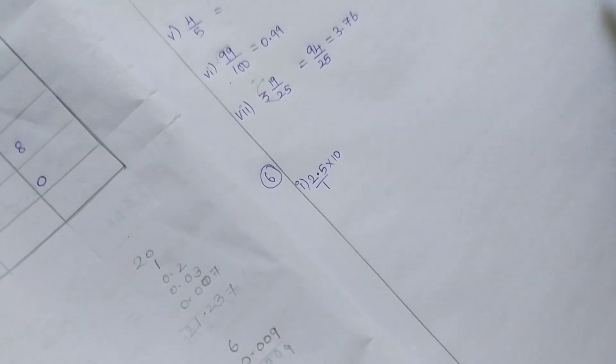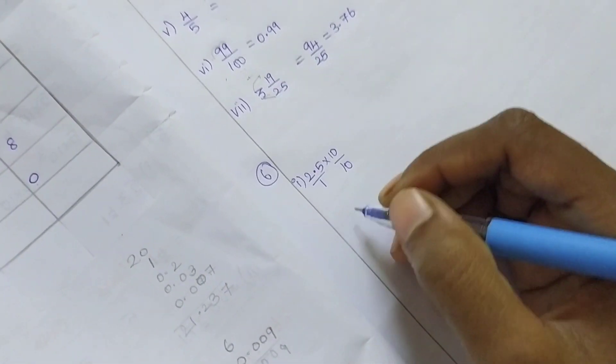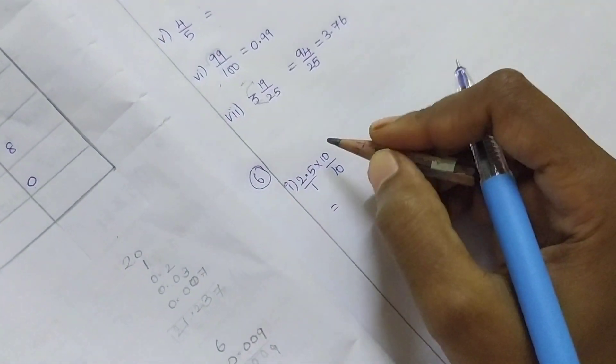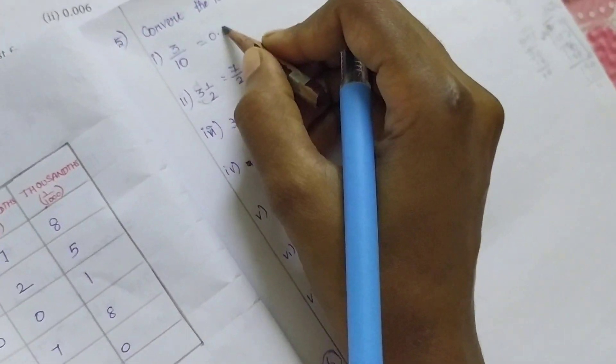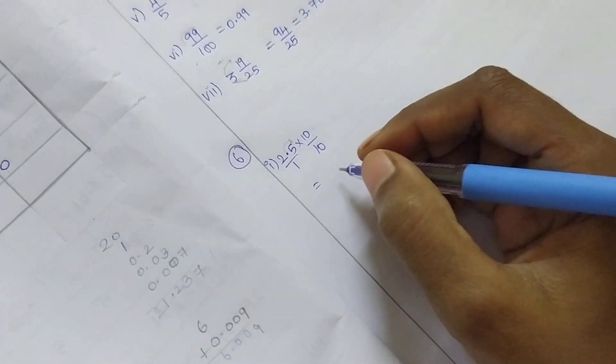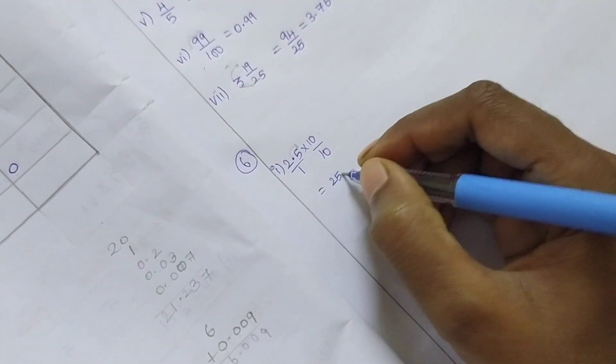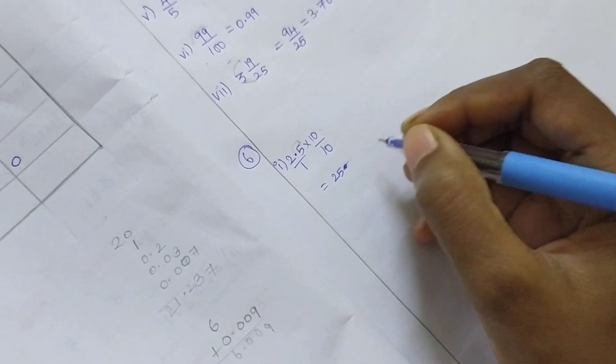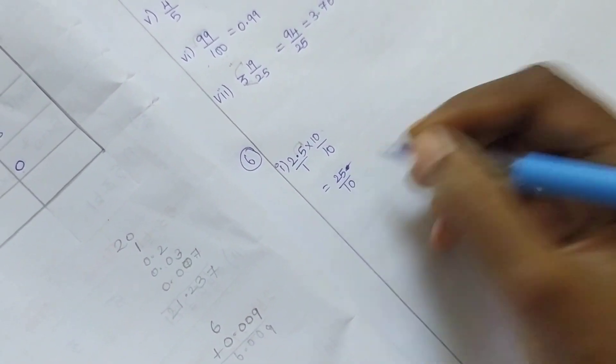Multiply - the point will be removed. Division of 10 means before the point, multiply 10 means after the point. 25.0 means nothing - no need to put that point. So 25/10. This is the fraction.